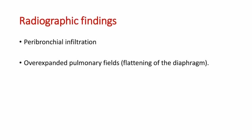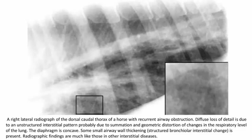Coming to radiographic findings — there will be peribronchial infiltration and over-expanded pulmonary fields, sometimes with flattening of the diaphragm. In this picture, a right lateral radiograph shows the characteristic bronchial infiltration seen throughout the lungs, and the diaphragm here is concave.